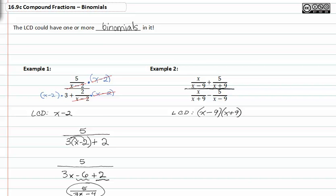So now, we'll just multiply that x plus nine, x minus nine to all the terms in both the numerator and the denominator.